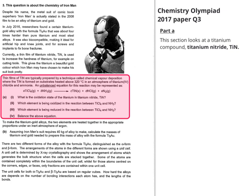Thin films of titanium nitride are typically prepared by a technique called chemical vapour deposition, where the titanium nitride is formed on surfaces called substrates heated above 320 degrees C in an atmosphere of titanium tetrachloride and ammonia. They've got an unbalanced equation. It's important that you recognise that because it says unbalanced and it's underlined. It's given the balancing numbers A, B, C, D, and E.